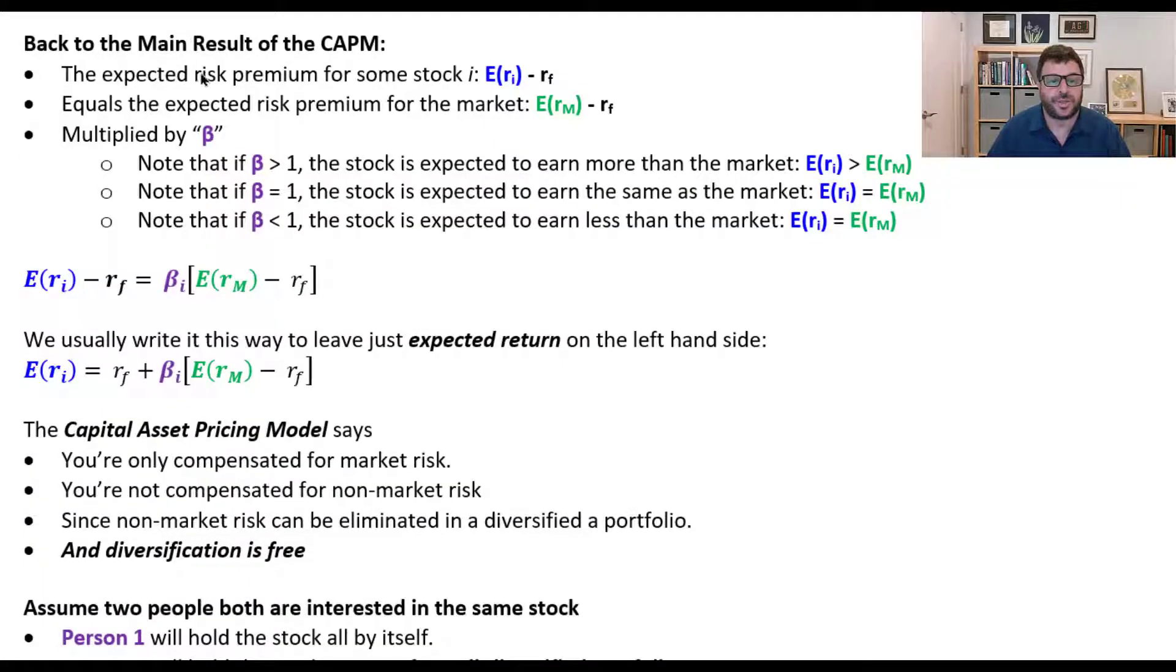Okay, so back to the main result of the CAPM. The expected risk premium for some stock I, which is its return minus the risk-free, equals the expected risk premium for the market, the market's return minus the risk-free, multiplied by this beta.